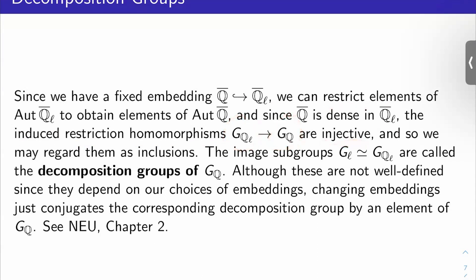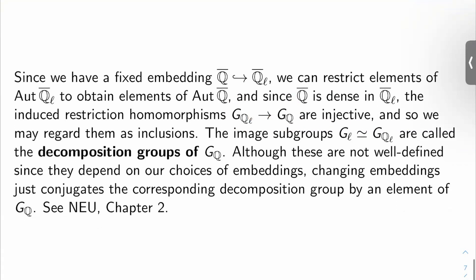Oh, that's fantastic. That means I can regard these as inclusions for each ℓ. Well, that means that I can take, I can identify G_{Q_ℓ} with its image here, which we usually call G_ℓ.